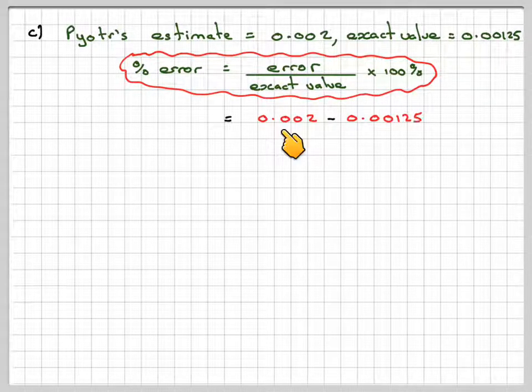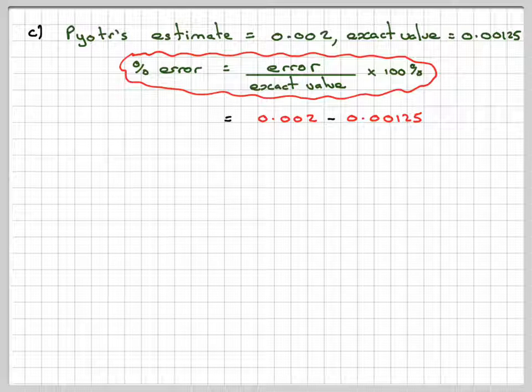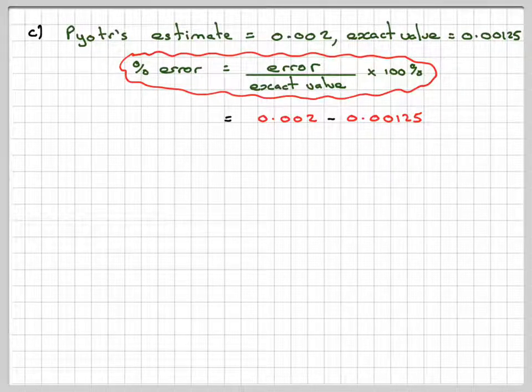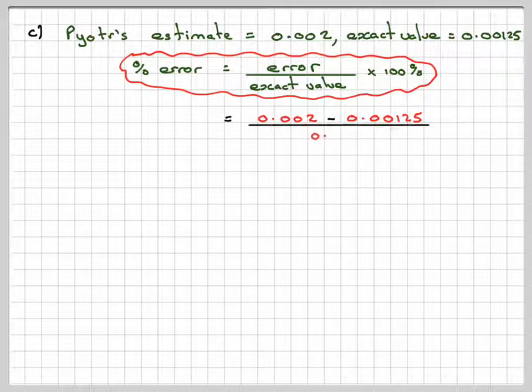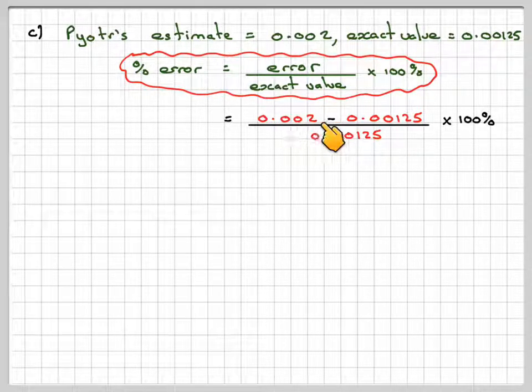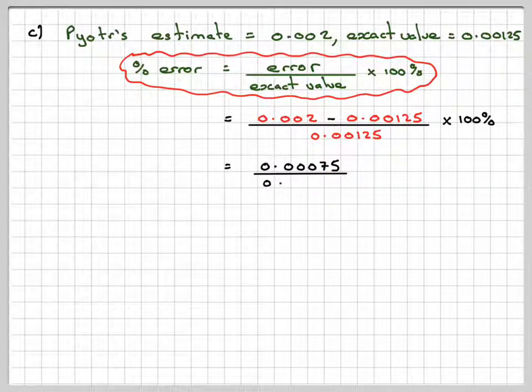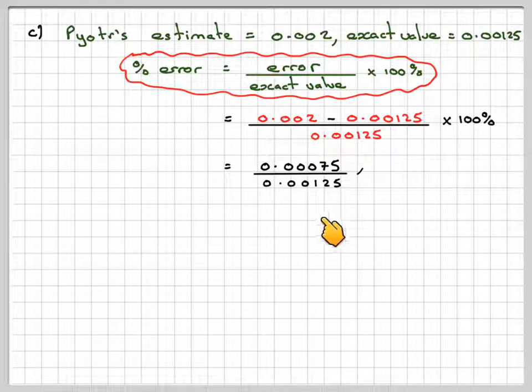So the error will be 0.002 minus 0.00125. You can write this around the other way, but we're only interested in the positive value, divided by the actual value, which is 0.00125, times 100%. 0.002 minus 0.00125 is 0.00075, over 0.00125, times 100%.